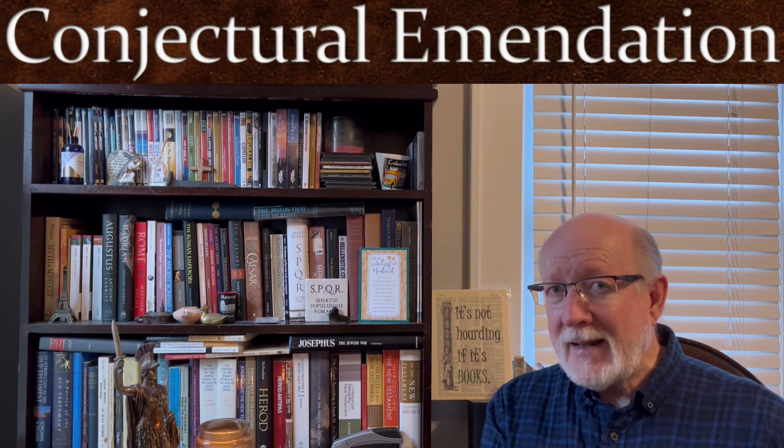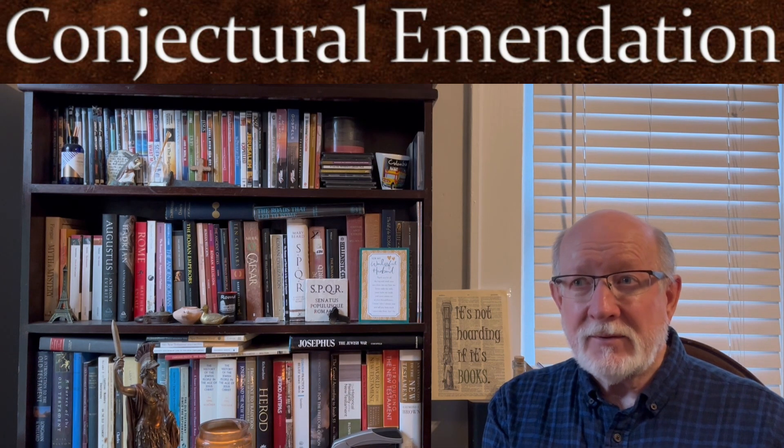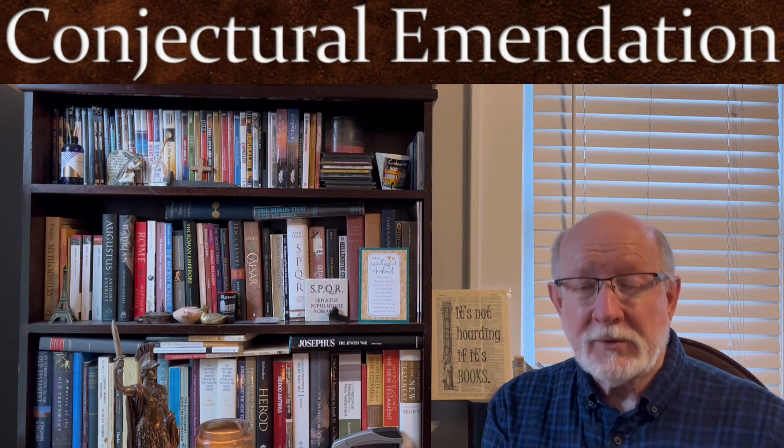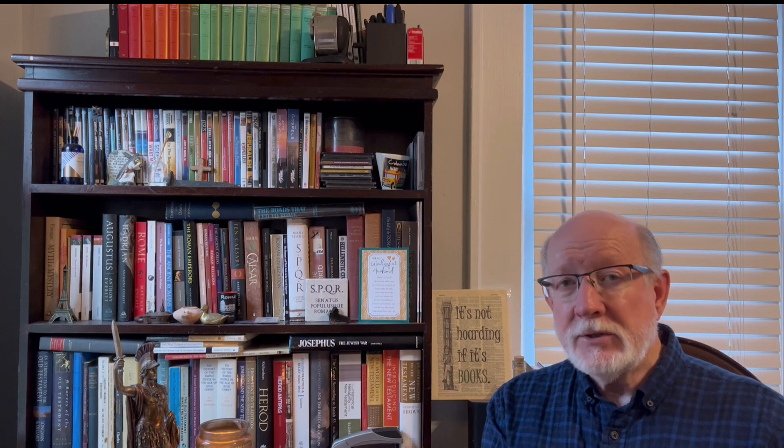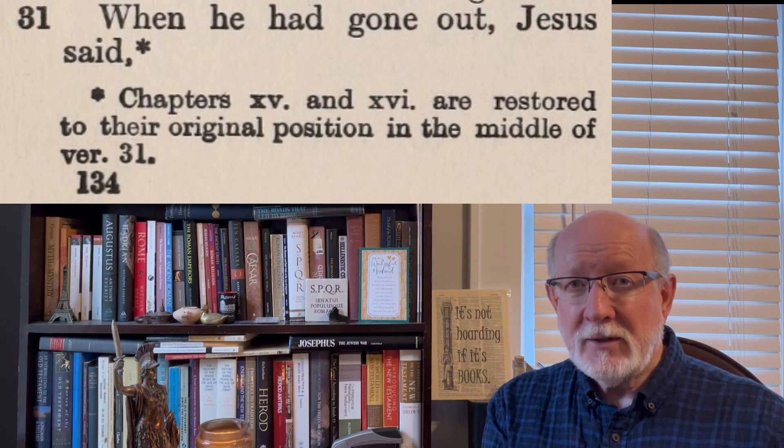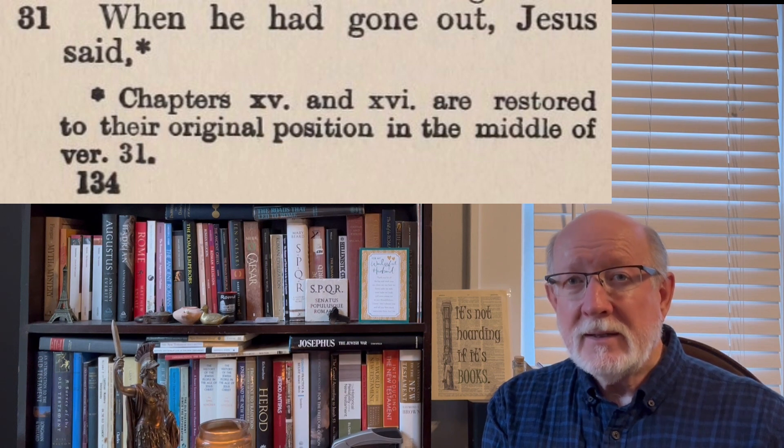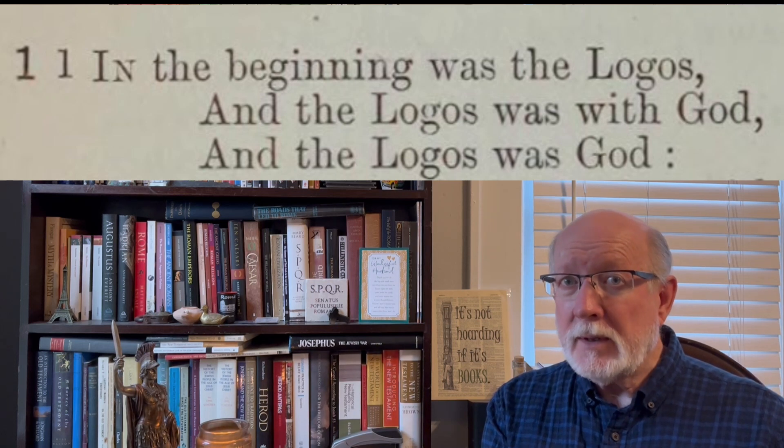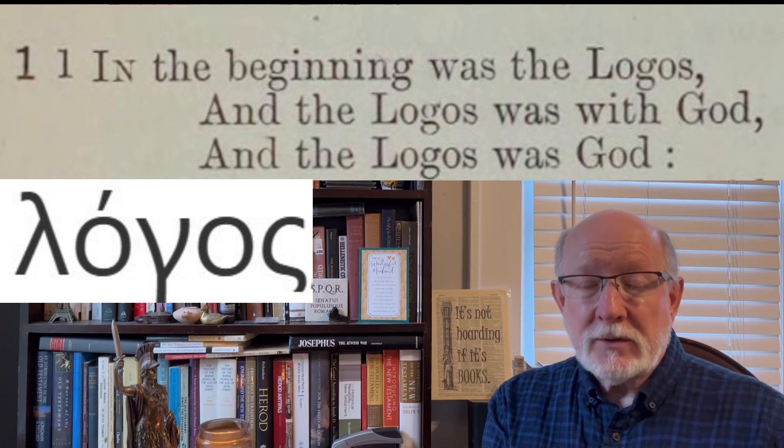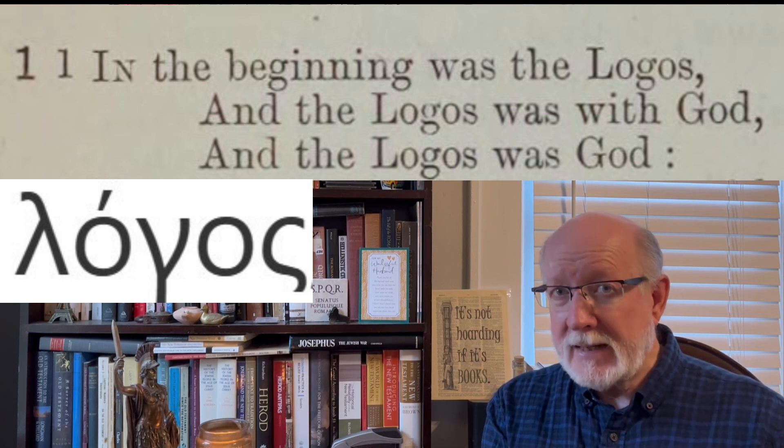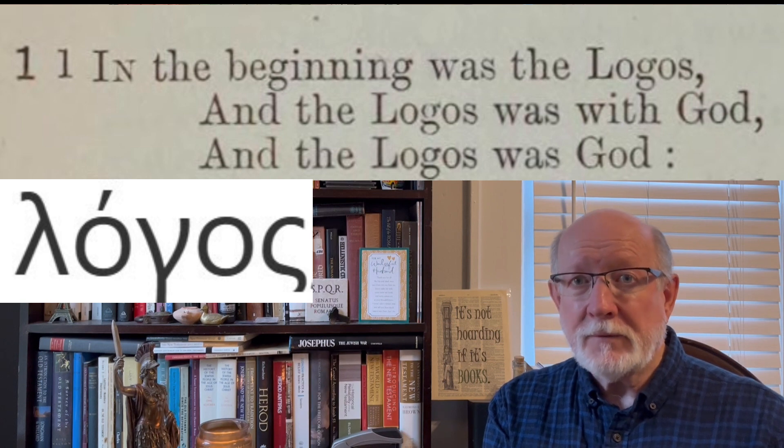He often substituted conjectural emendations for the text of both Testaments. Now, a conjectural emendation, quite simply, is an educated guess of what the text said in situations where it was unclear. In the New Testament alone, he adopts some 30 conjectures that are unsupported by any manuscripts of his time. He likewise rearranged chapters in the New Testament as he did in the Old. For example, John chapter 14 comes after John 16, and he has a note to explain his decision. In John chapter 1, he transliterates the Greek word logos in the English 'logos' rather than translating it as 'word.' And he has a textual note for that as well.